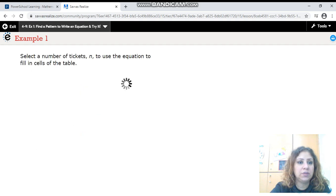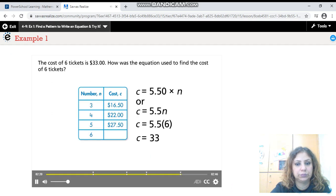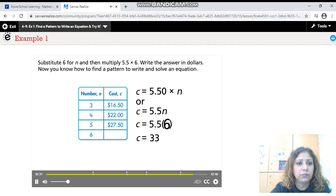It's your turn now. Select a number of tickets and use the equation to fill in cells of the table. Pause the video and try to solve it on your own. Copy it to your copybook and try to solve it. Substitute 6 for N and then multiply 5.5 by 6. Write the answer in dollars. Now you know how to find the pattern to write and solve an equation.